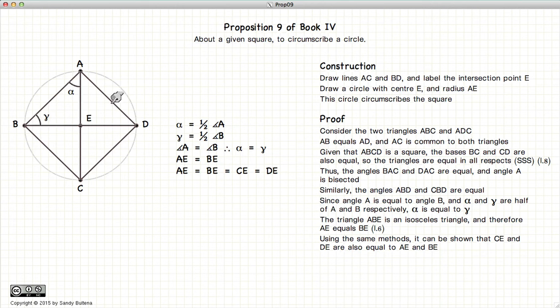Similarly we can show that BE is equal to CE which is equal to DE. In other words these four lines are all equal.